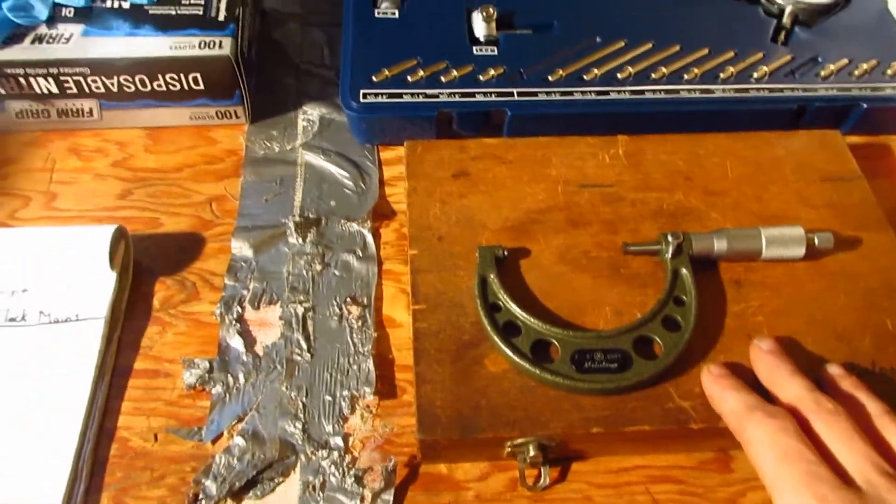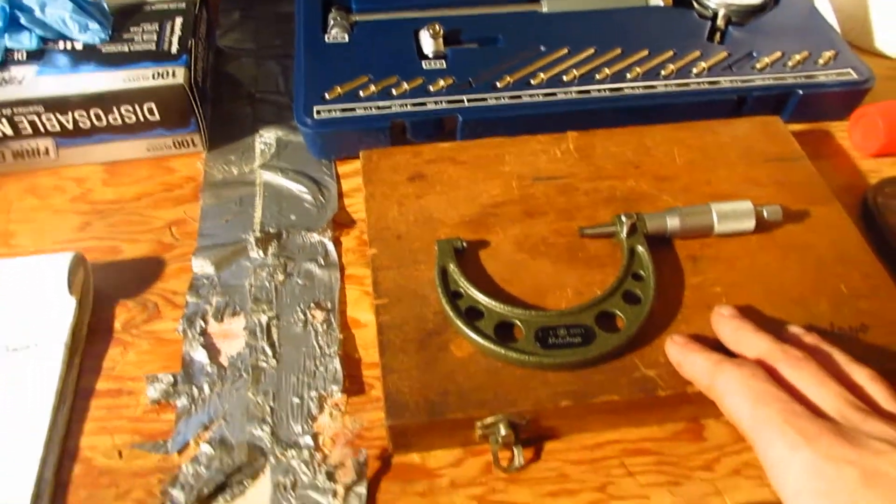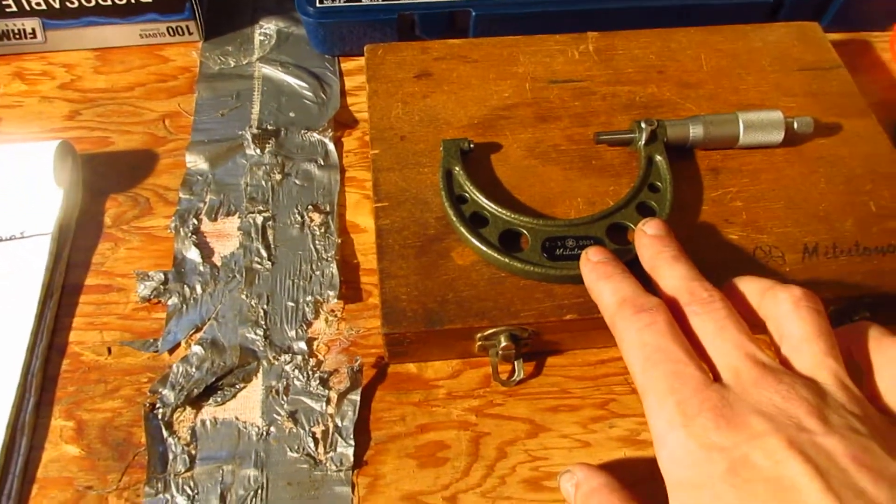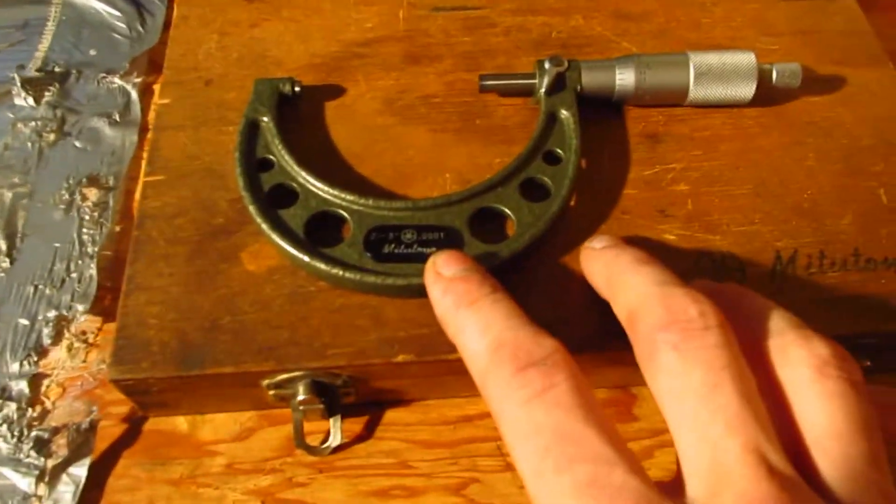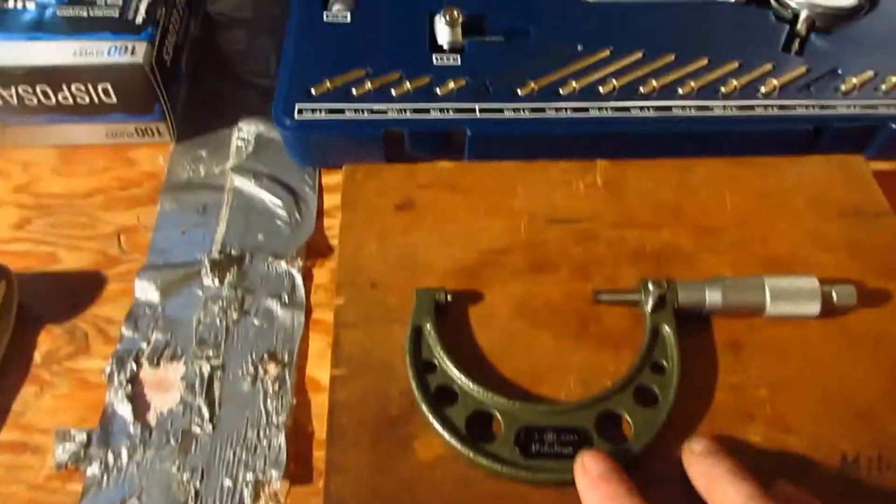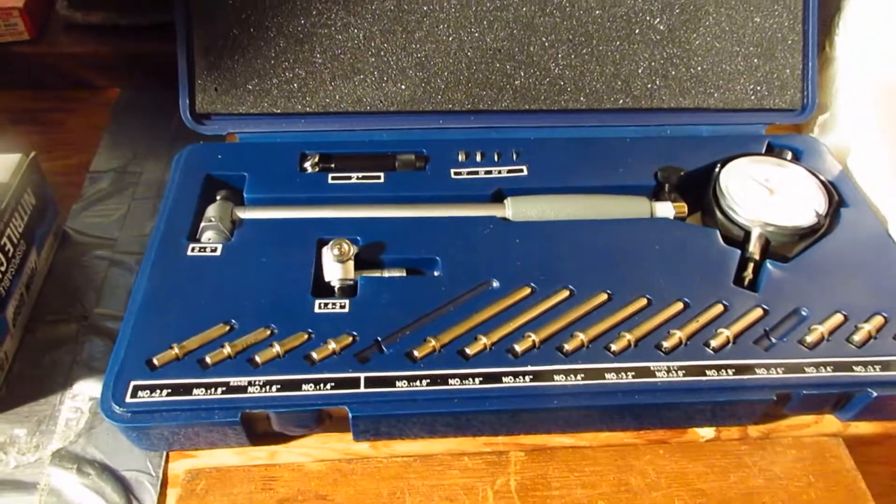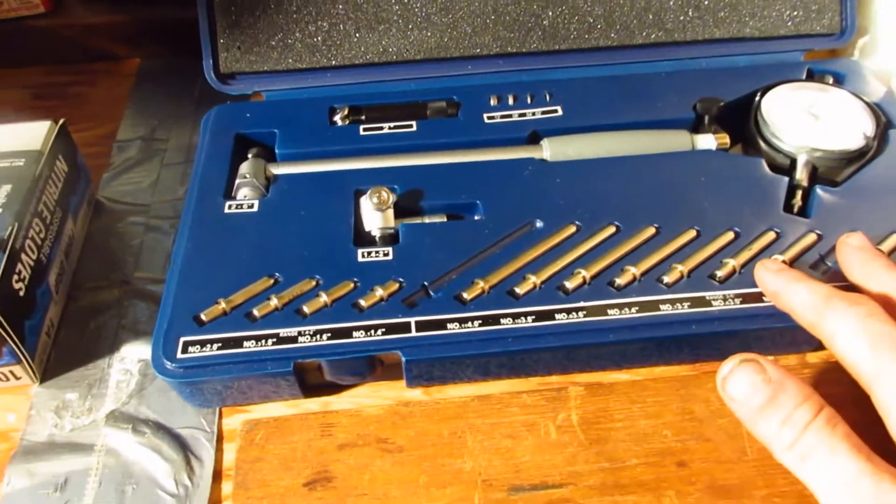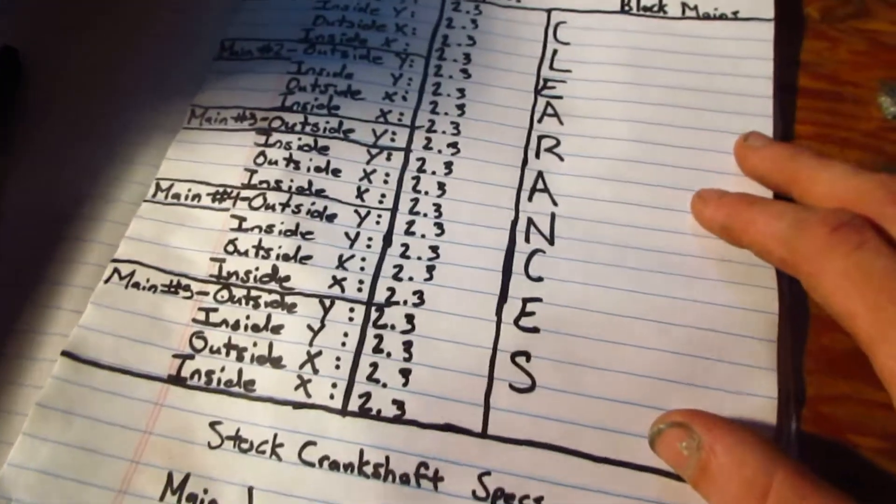The tools that we'll need today to measure the main bearing clearances are going to be a two to three inch micrometer, and you want it to read to one ten thousandth of an inch. Then we're going to need a dial bore gauge, and you're going to want to have paper to record all your measurements.